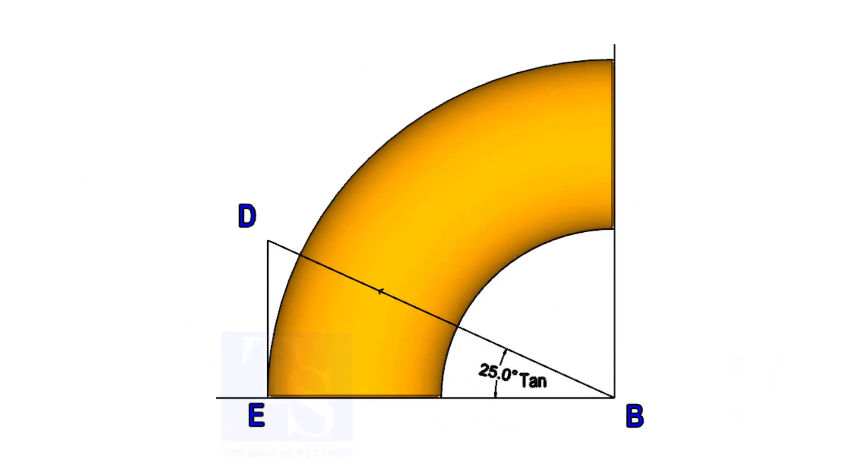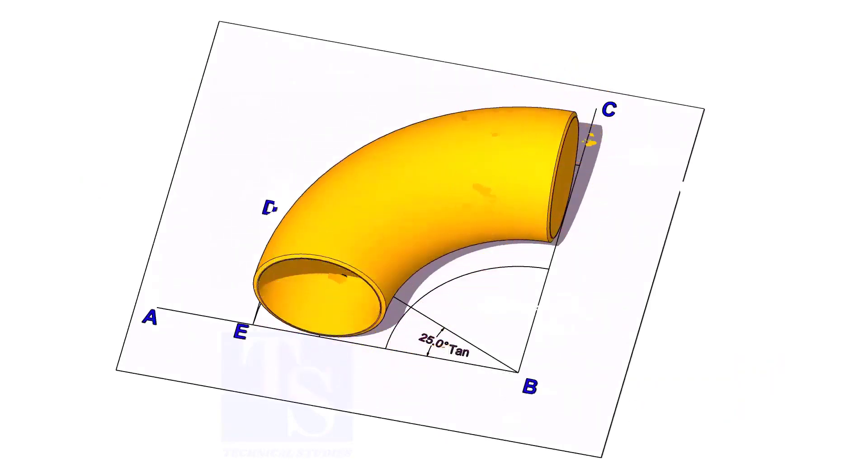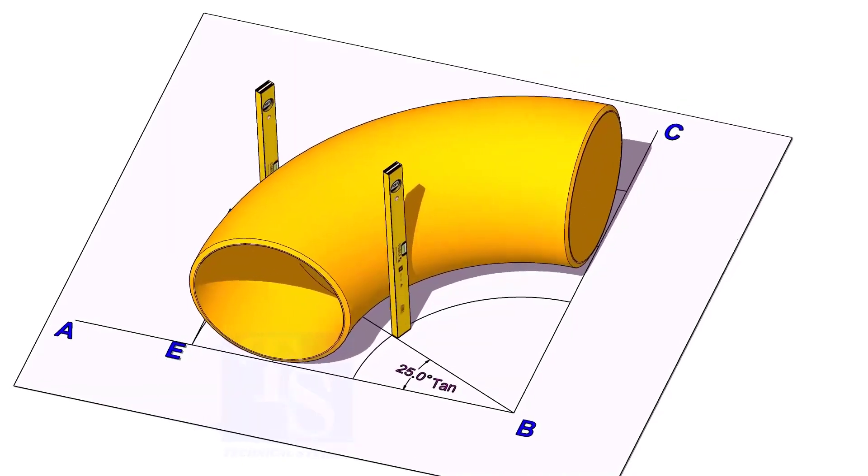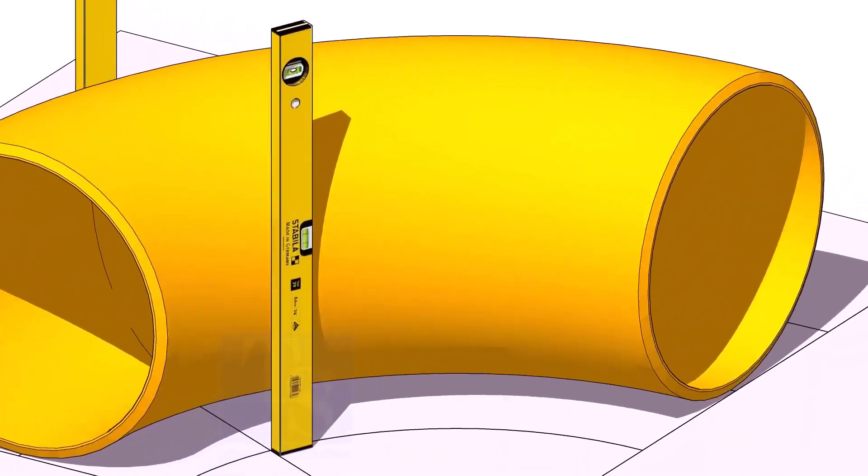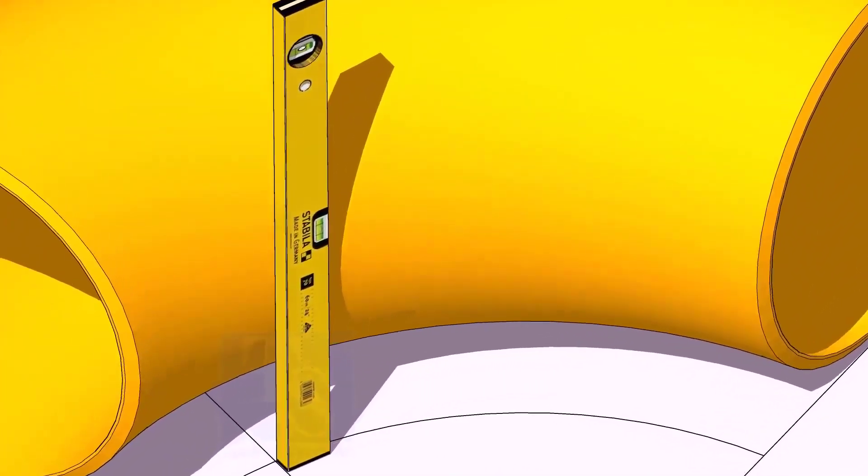Now, put the elbow exactly on the layout as shown. Hold two large level bottles at the edge of the elbow on both sides vertically, and strike a mark where the level bottle edge touches the elbow.